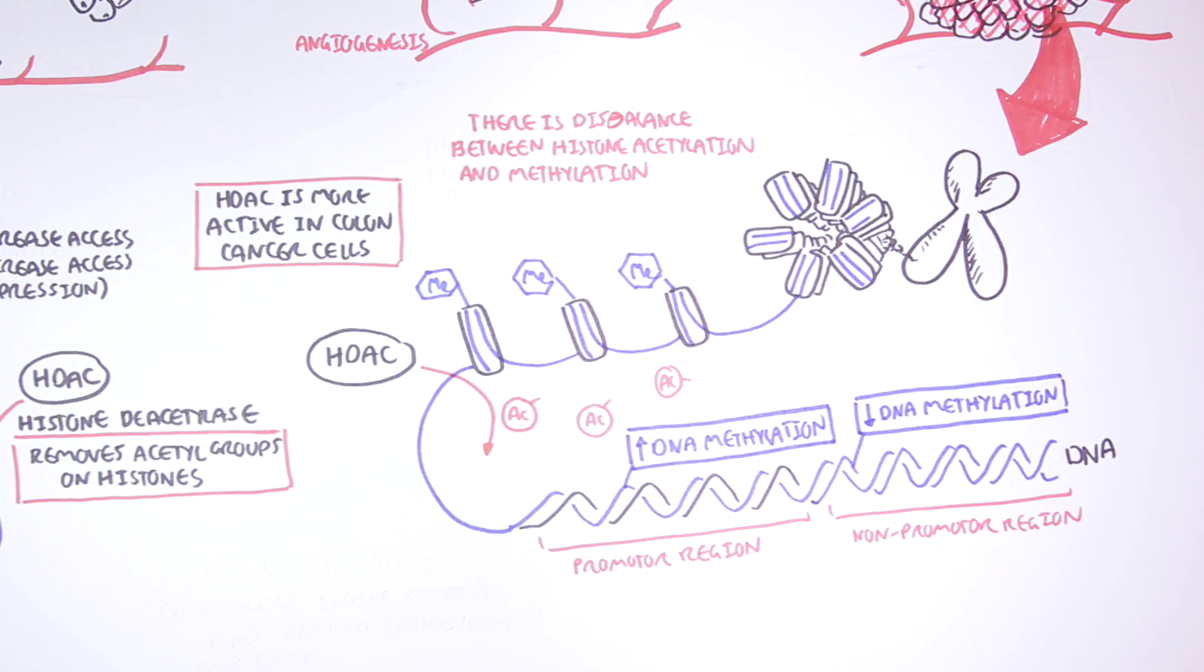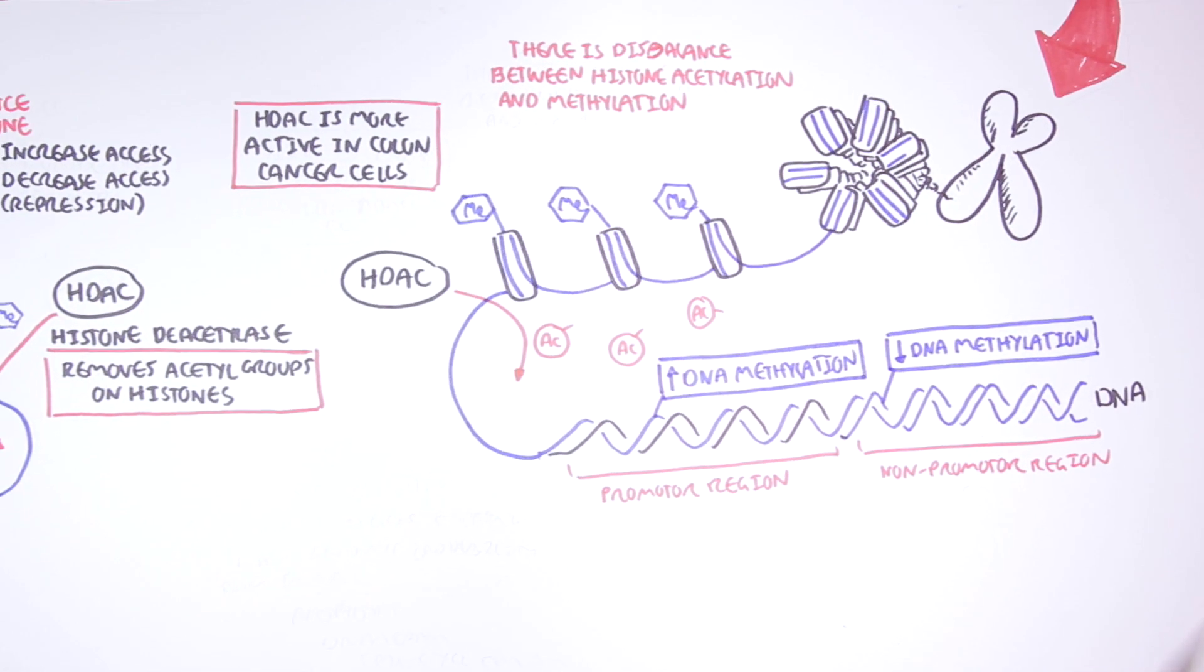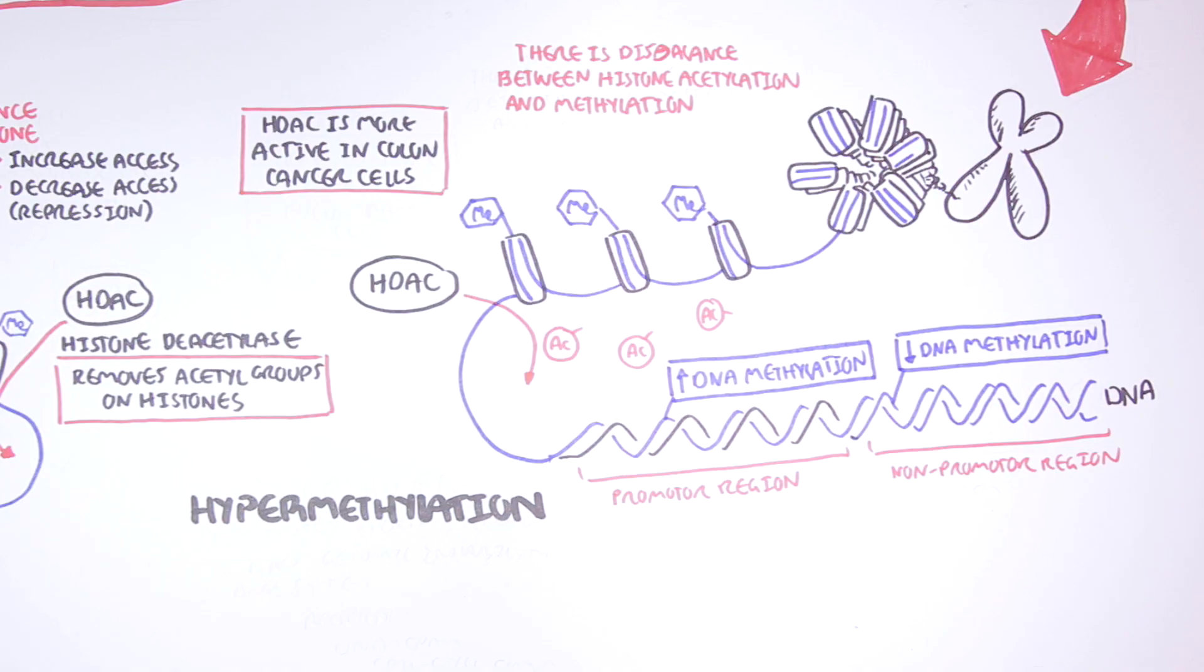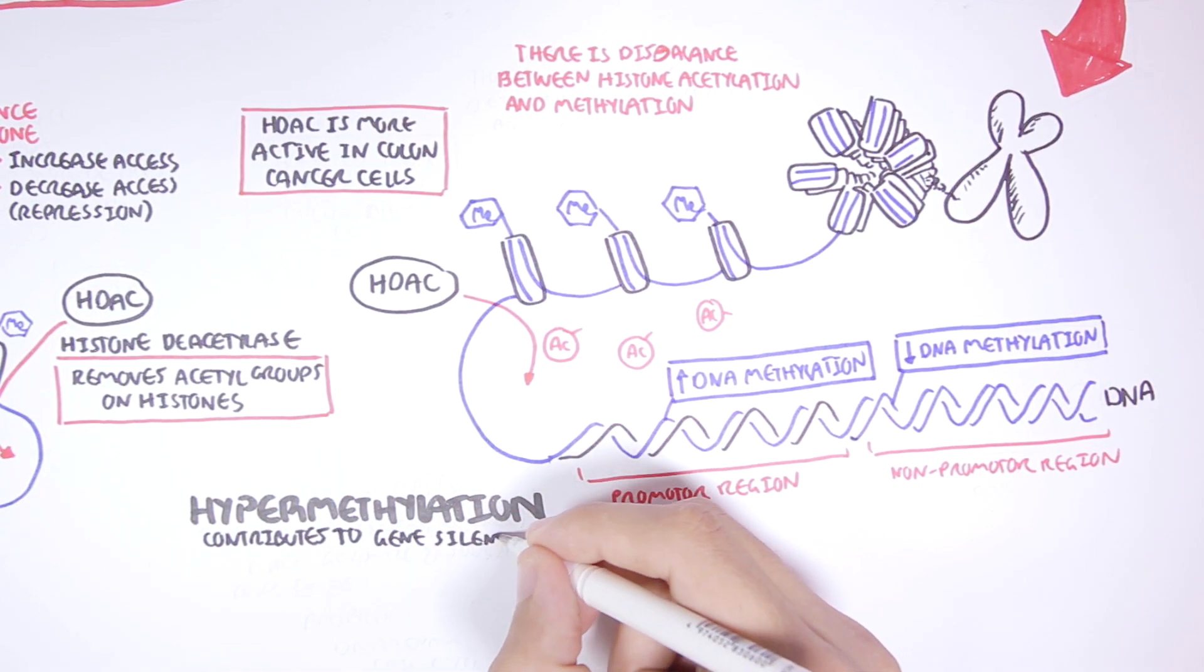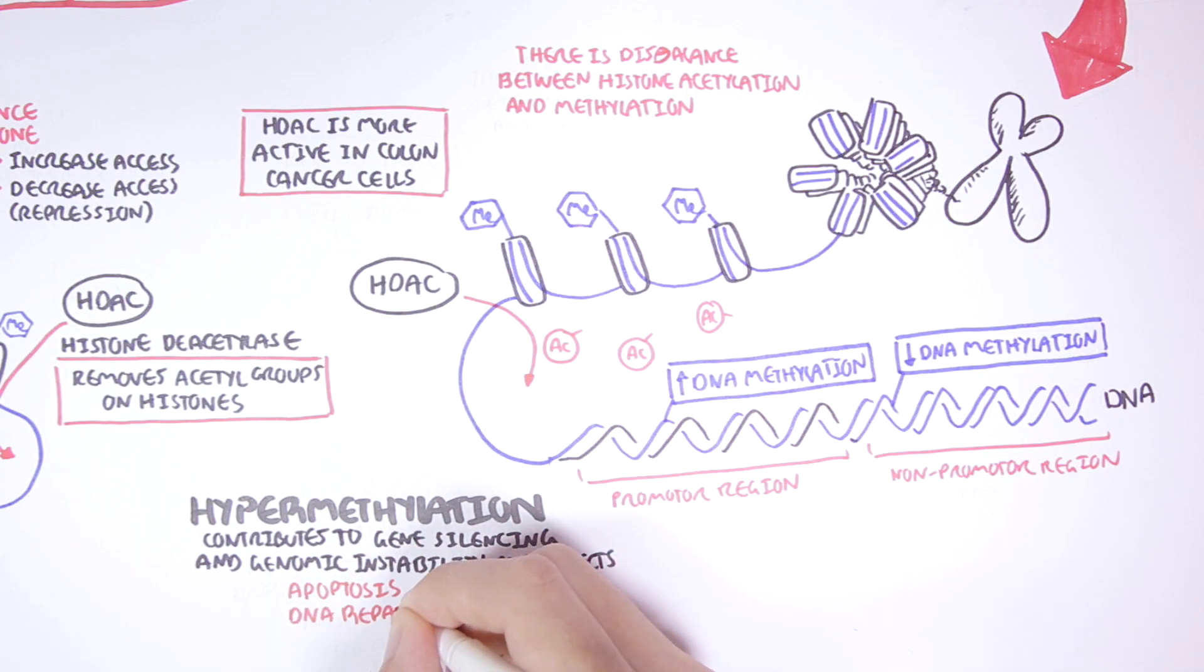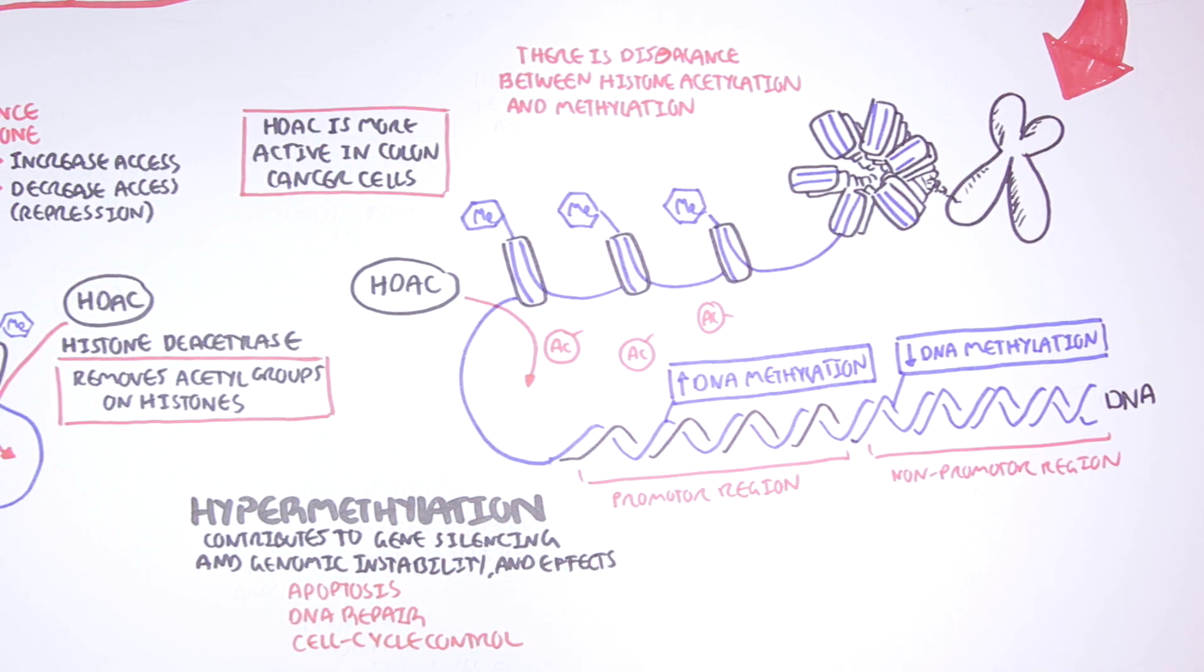And in non-promoter regions, there tends to be fewer methylation. So again, there is hypermethylation on promoter regions, which contributes to gene silencing and genomic instability, and it will affect apoptosis, DNA repair, and cell cycle control. And there tends to be a decrease in methylation on non-promoter regions, which essentially don't do anything.